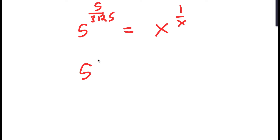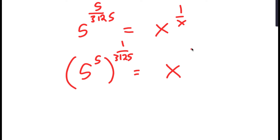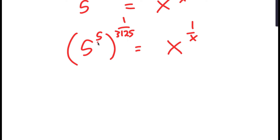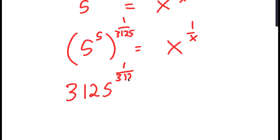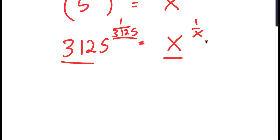And I can rewrite this as 5 to the power of 5, to the power of 1 over 3125, is equal to x to the power of 1 over x. And now 5 to the power of 5 is equal to 3125. So I get 3125 to the power of 1 over 3125 is equal to x to the power of 1 over x. Notice how these two are in the same form, so x is equal to 3125.